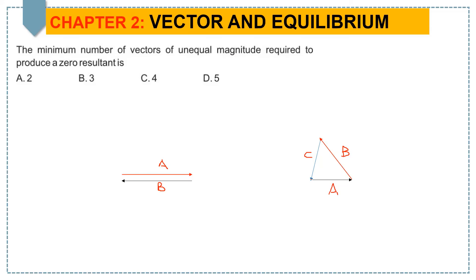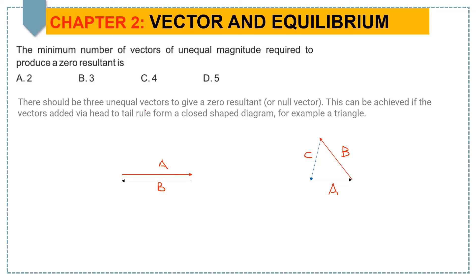So there should be three unequal vectors to give a zero resultant or null vector. This can be achieved if vectors added by head-to-tail rule form a closed-shaped diagram, for example, a triangle. So the answer is 3. Thank you.